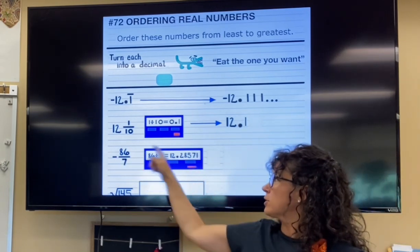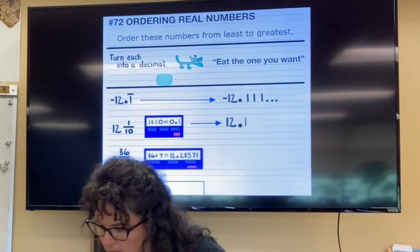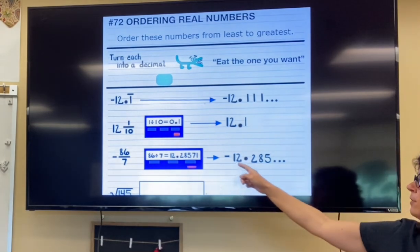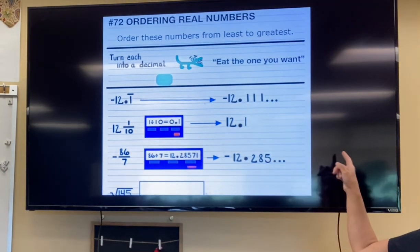This is a negative number, so it's still a negative number. So coming off to the side here and just saying I've got negative 12.285, et cetera, et cetera.